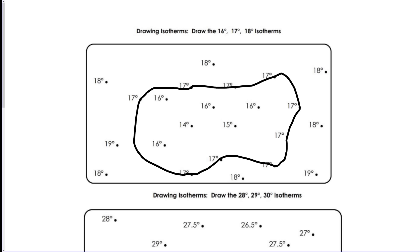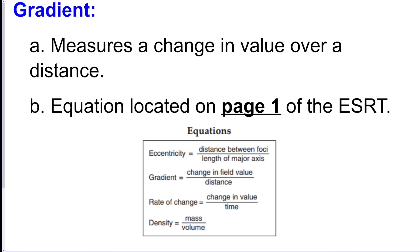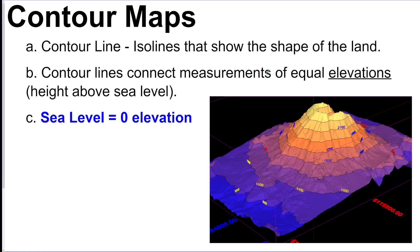All right, so definitely be familiar with those. We got our gradient. The formula is right here on the reference table: change in field value divided by distance. It's like the same thing as rate of change, except with mountains.